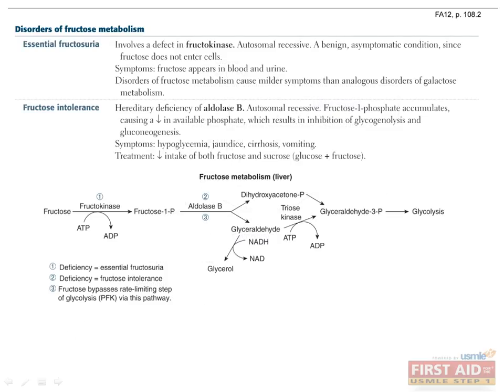Essential fructosuria is an autosomal recessive defect in fructokinase. Now fructokinase is the enzyme that phosphorylates fructose after it enters the cell, and it's this phosphorylation that prevents the fructose from leaving the cell. Therefore, without this enzyme, there's nothing keeping fructose in the cell, so it just washes out in the urine.